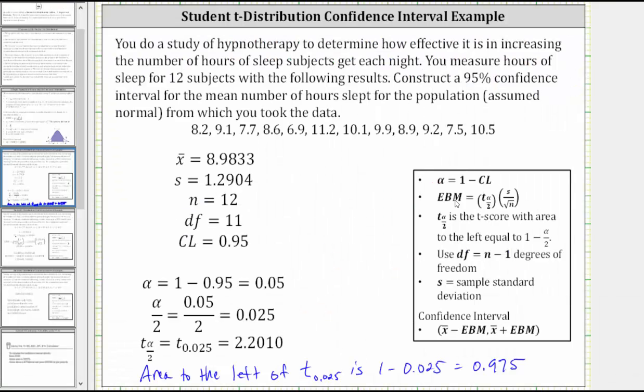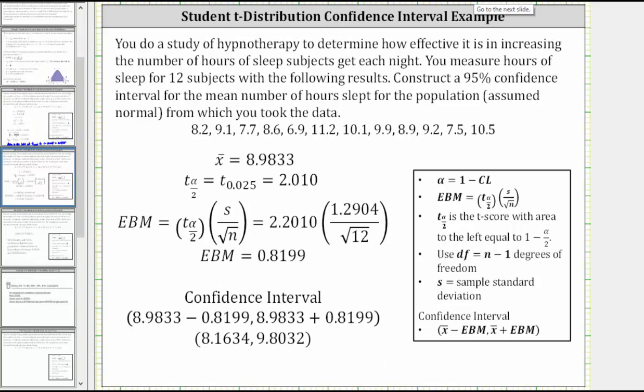Now we have all the information we need to find the error bound, where the error bound is equal to the t-score times the quotient of the sample standard deviation and the square root of the sample size, which gives us 2.2010 times 1.2904 divided by the square root of 12, which to four decimal places gives us 0.8199.